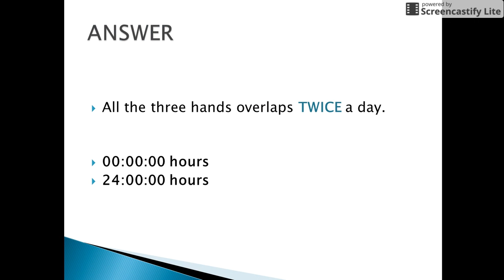The answer is very simple. All the three hands of an analog clock would overlap only twice a day. Once at 12 noon and once at 12 midnight.